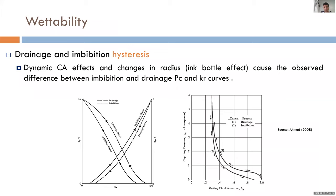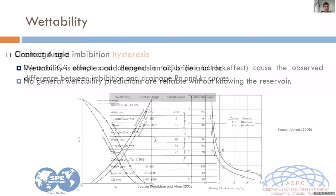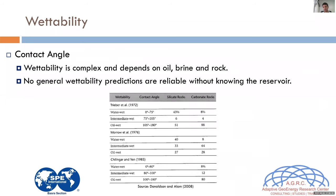In primary drainage we assume the rock is completely water-wet, so the relative permeability to the non-wetting phase is higher. In imbibition — typically measured after aging at initial wettability conditions — we may have less water-wet character, causing the non-wetting phase relative permeability to be lower. All of this is complex and depends on the type of rock, oil, and brine. There is no general classification of wettability that can be obtained purely from equations or models.